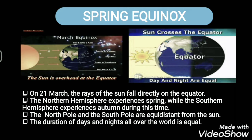The first equinox is the spring equinox, also known as the vernal equinox or the March equinox, as it takes place in the month of March. On 21st of March, the rays of the Sun fall directly on the equator. As a result, the northern hemisphere experiences spring season while the southern hemisphere experiences autumn season.